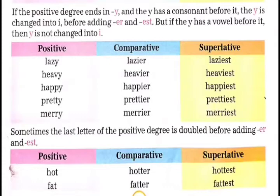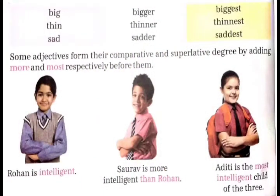Sometimes the last letter of the positive degree is doubled before adding -er and -est. कभी-कभी er and est add करने से पहले positive degree का last letter double हो जाता है. इसके कुछ examples: hot, hotter, hottest; fat, fatter, fattest; big, bigger, biggest; thin, thinner, thinnest; sad, sadder, saddest.